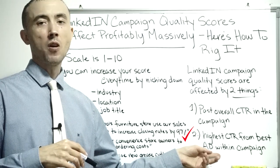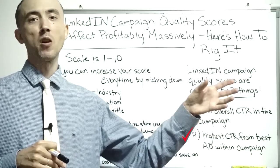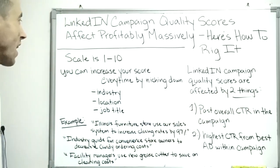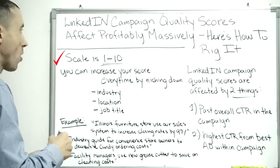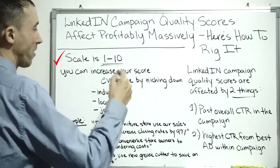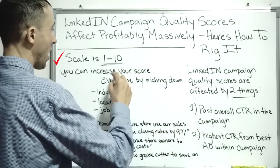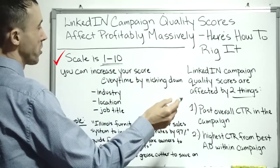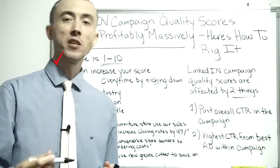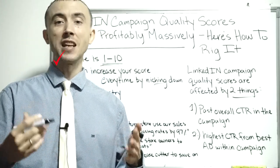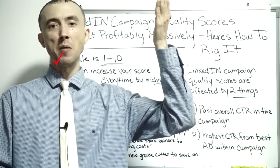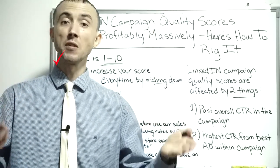If you have an ad that really crushes it, you can bring up your overall campaign quality score pretty quickly because of how they calculate it. A campaign quality score on LinkedIn is based on a scale of one to ten. You can increase your score by increasing your click-through rate, which you increase most easily by being more relevant and niching down. Quality score affects how much you're going to pay per click — the higher your click-through rates, the less you're going to pay per click.